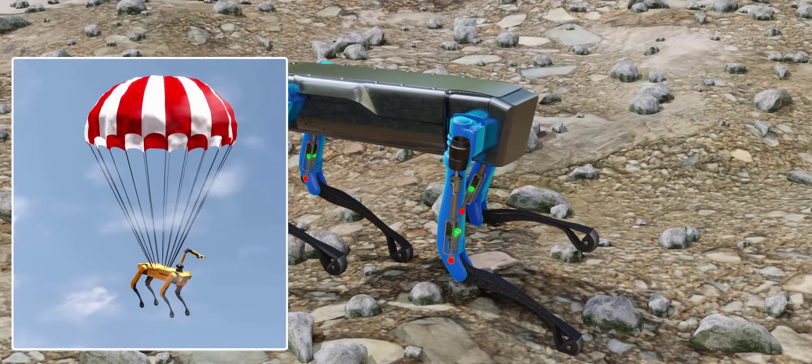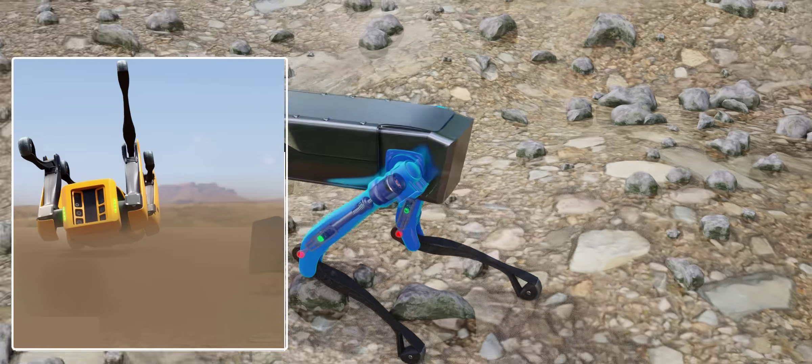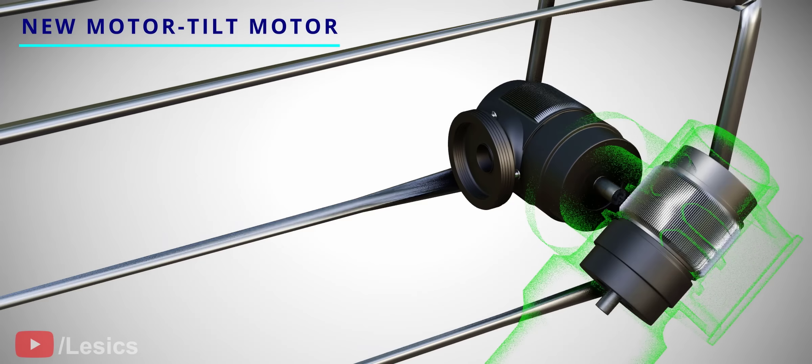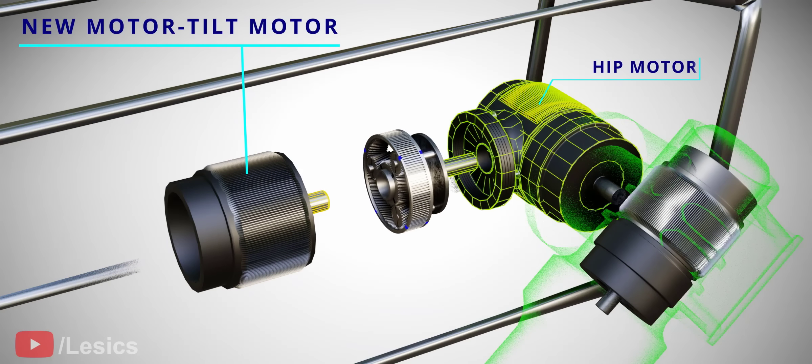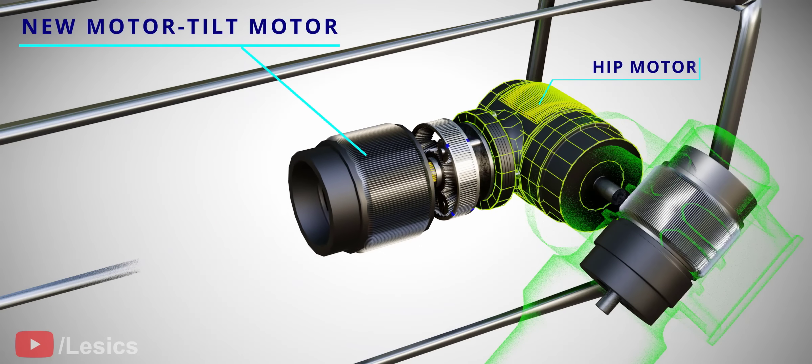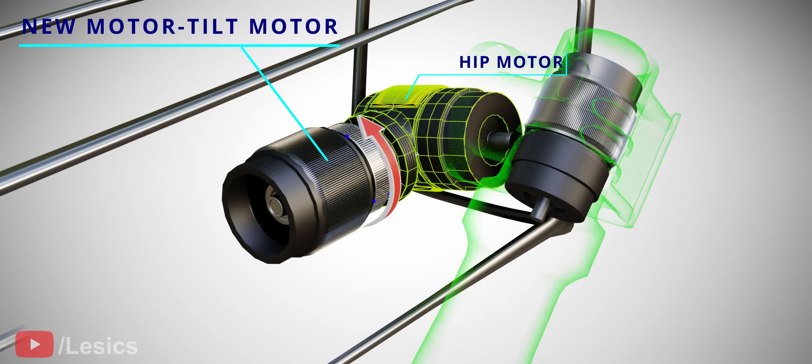At the beginning of this video, we saw a spot robot have an accident. The solution to recover from this position is an interesting design change. Bring one more motor in and connect its rotor with the body of the hip motor. Looks like a crazy arrangement, right? This is what happens to the hip motor when the tilt motor operates.